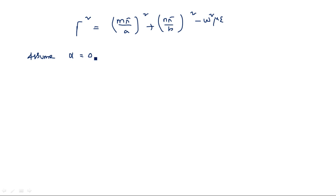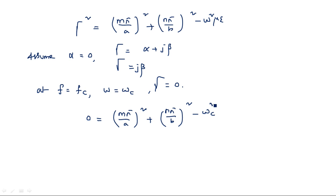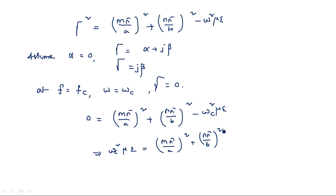Assume the attenuation constant alpha equals 0. Then the propagation constant gamma equals alpha plus j beta, so gamma equals j beta. At cutoff frequency, omega equals omega_c, the propagation constant is 0. Substituting: 0 equals (M pi/A)² plus (N pi/B)² minus omega_c² mu epsilon, which gives omega_c² mu epsilon equals (M pi/A)² plus (N pi/B)².